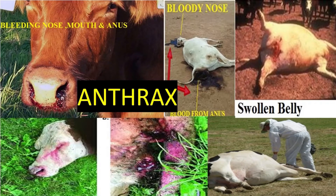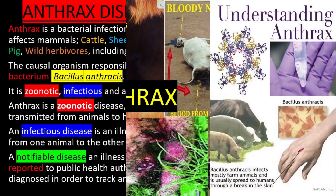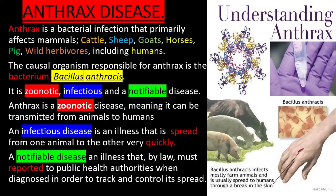Anthrax Disease: The Symptoms, Mode of Infection, and Control Measures. Anthrax is a bacterial infection that primarily affects mammals such as cattle, sheep, goats, horses, pigs, wild herbivores, and including humans. The causal organism responsible for Anthrax is the bacterium Bacillus anthracis. It is zoonotic, infectious, and a notifiable disease.